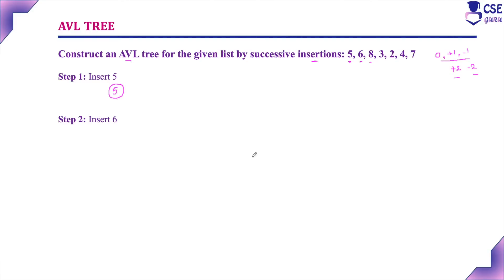Second element is 6. Insert 6. Since it is a binary search tree, the left subtree should consist of elements less than the root node and the right subtree should consist of elements greater than the root node. Root node is 5 and 6 is greater than 5, so insert it as a right child. Checking the balance factor: for node 5 it is 0 minus 1 = -1, and for leaf node 6 it is 0. Balance factor is satisfied, so this is an AVL tree — no rotations needed.